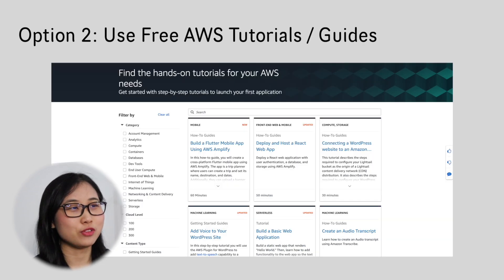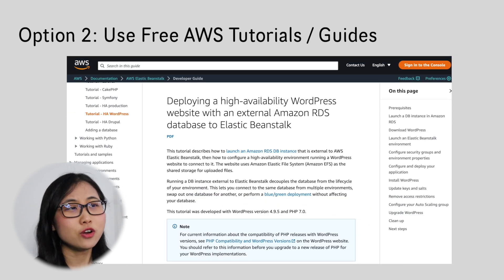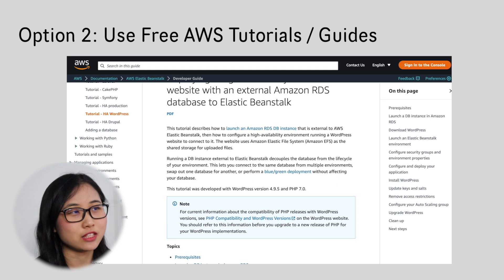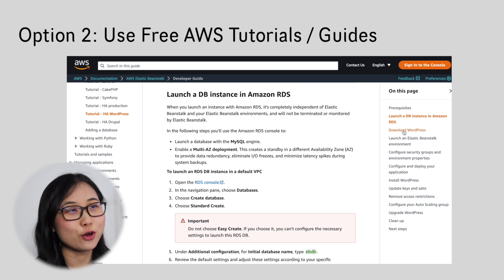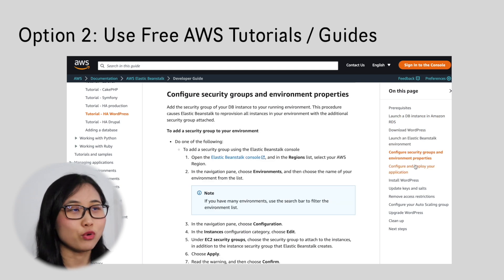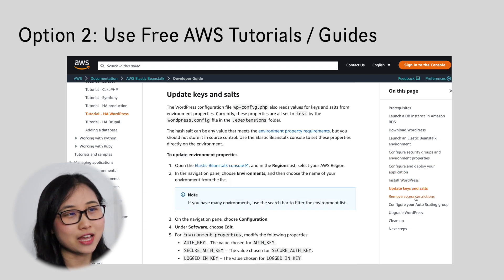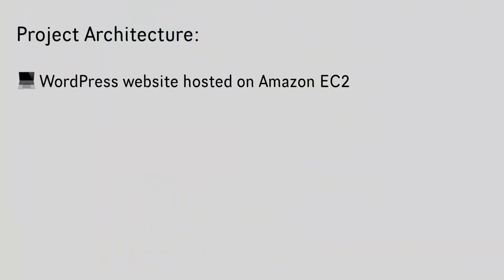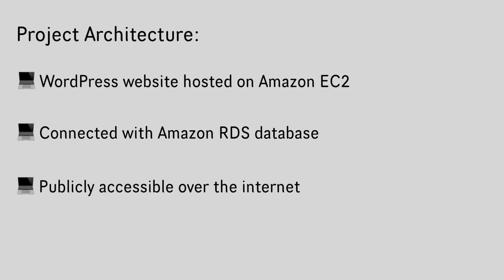The second option is to build the project with the help of free AWS tutorials and documentation. I found a free tutorial that explains how to deploy and host the WordPress website. The only thing to note is that this one uses AWS Elastic Beanstalk, which means it automatically handles part of the deployment for you. So if you go with this tutorial, I'd recommend trying to set up the VPC and subnets manually without the help of Elastic Beanstalk — that way you can learn more about the underlying networking layer. Regardless of how you build it out, the end result is a WordPress application hosted on Amazon EC2, connected with an RDS database, and publicly accessible over the internet.